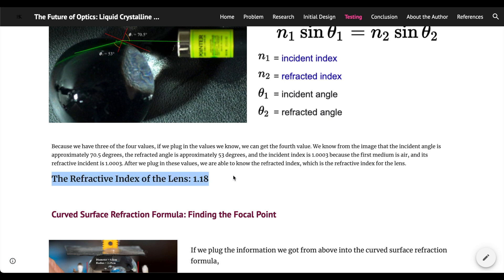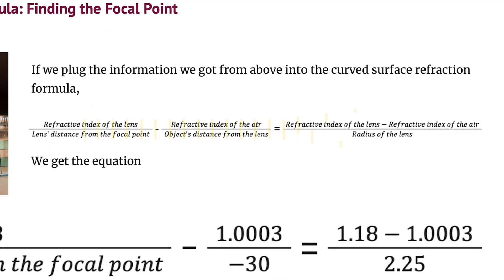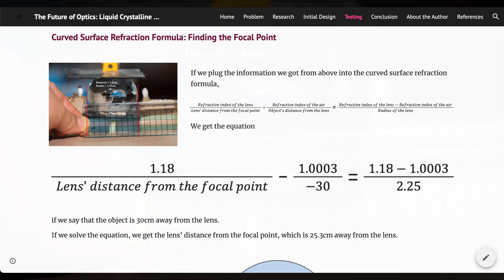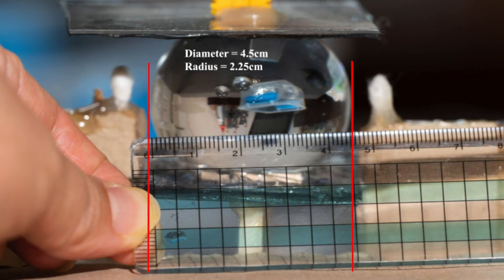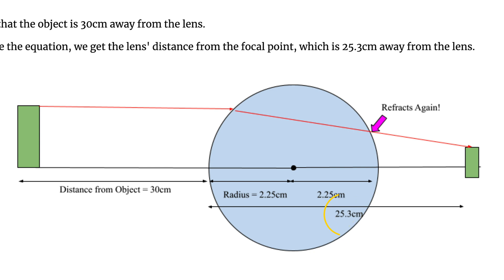With the refractive index of the lens, we are now able to calculate where the focal point will be using the curved surface refraction formula. The formula states that the refractive index of the lens divided by the lens's distance from the focal point, subtracted by the refractive index of the air divided by the object's distance from the lens, equals the refractive index of the lens subtracted by the refractive index of the air divided by the radius of the lens. And if we say that the object is 30cm away from the lens and we get the radius of the unpressed lens, we get the lens's distance from the focal point, which is 25.3cm away from the lens.